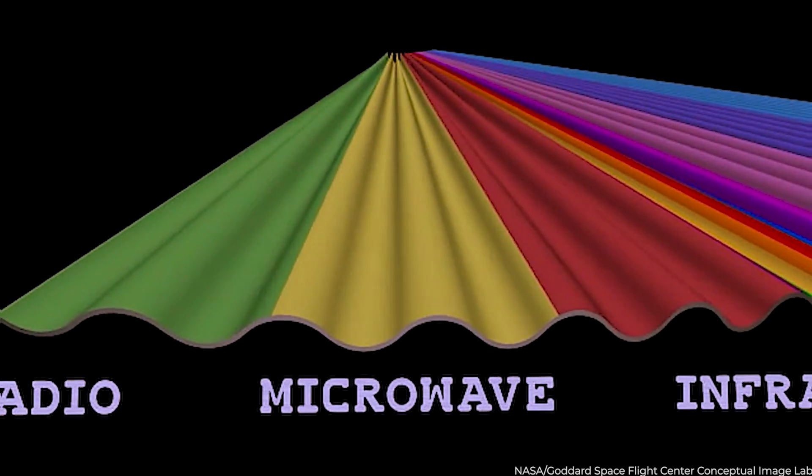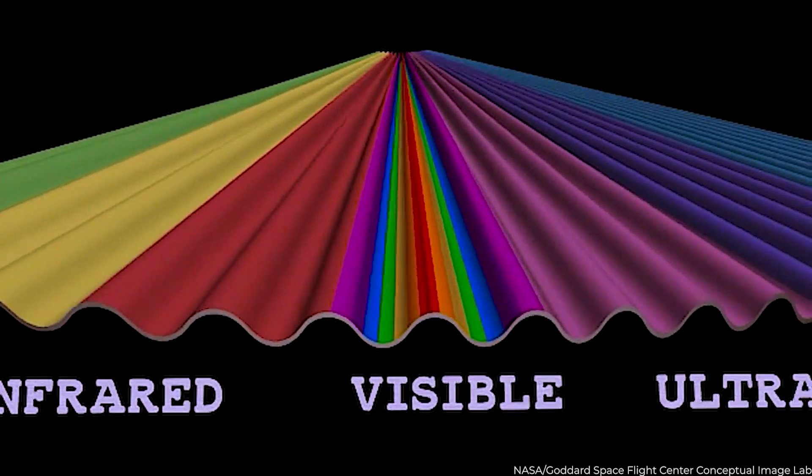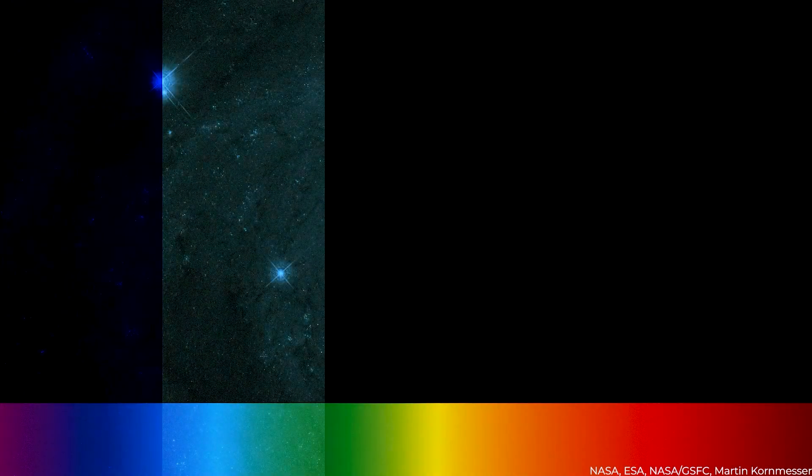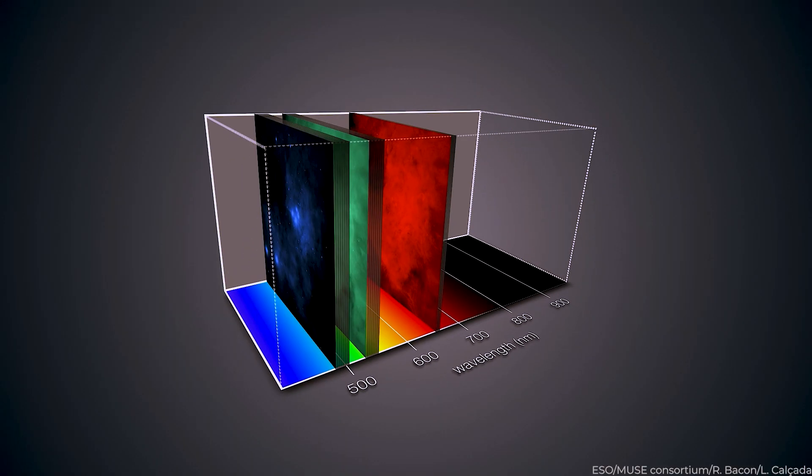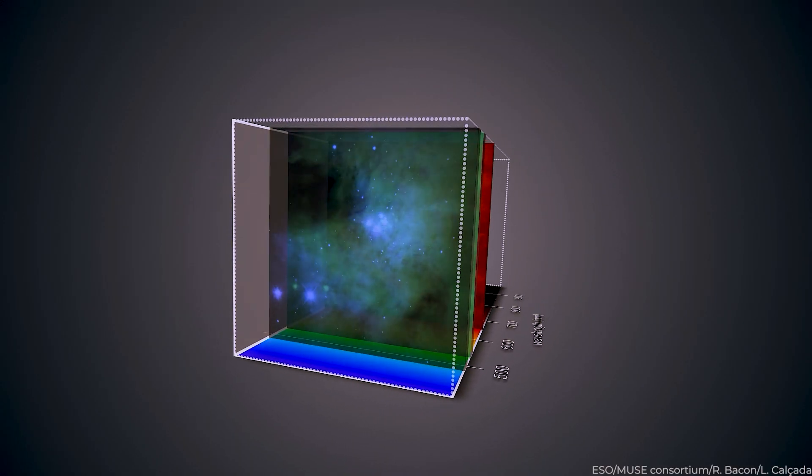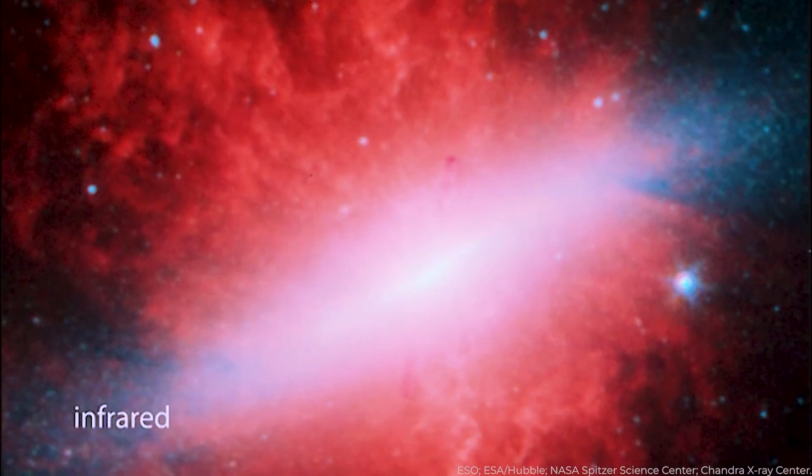Because infrared light has longer wavelengths than visible light, the light waves pass through cosmic clouds more effectively. The light does not clash with and become dispersed by these densely packed particles as often. Finally, Webb's infrared vision can see into realms Hubble cannot.